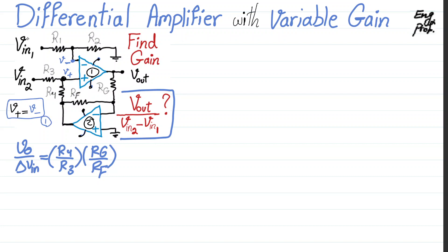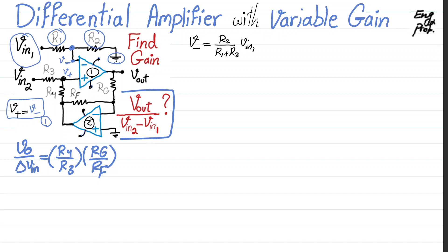Equation number two: we look at Vin1 and ground. The voltage that appears at the negative input terminal of op-amp one is just the voltage division between resistors R1 and R2. So V at the negative input terminal of op-amp one equals R2 divided by R1 plus R2, times Vin1. That's equation number two.